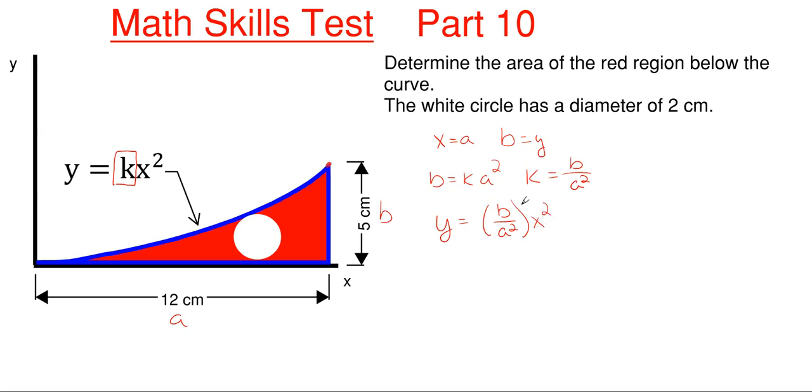All right so now that I have k, I can now integrate this equation to get the area. So the total area underneath the curve including the white circle is found by integrating my y with respect to x.